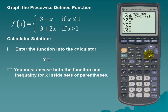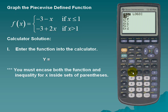For the second piece of our function, I'm going to enter that in Y2. Here we have negative 3 plus 2x — close the parentheses — and our condition for x is greater than 1, also in parentheses.